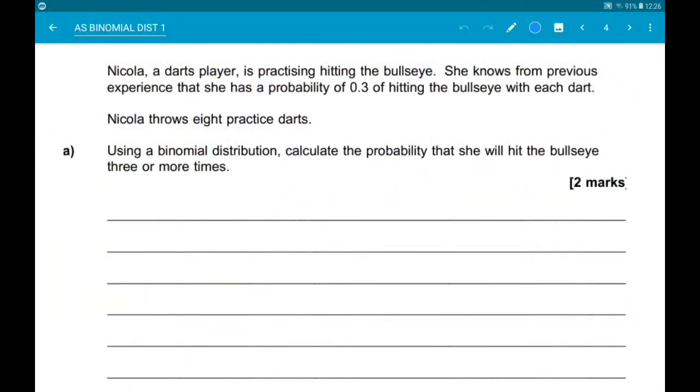First up, Nicola, a darts player, is practicing hitting the bullseye. She knows from previous experience she has a probability of 0.3 of hitting the bullseye with each dart. She throws eight practice darts. Part A, using a binomial distribution, calculate the probability she gets the bullseye three or more times.